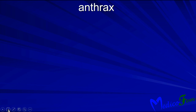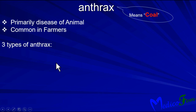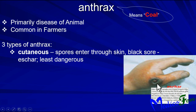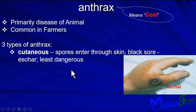Anthrax — the word comes from the Greek for 'coal,' referring to its black color. Anthrax is the primary disease of animals and is commonly found in farmers. There are three types: cutaneous anthrax is caused by spores entering through the skin and causes a black sore called an eschar.